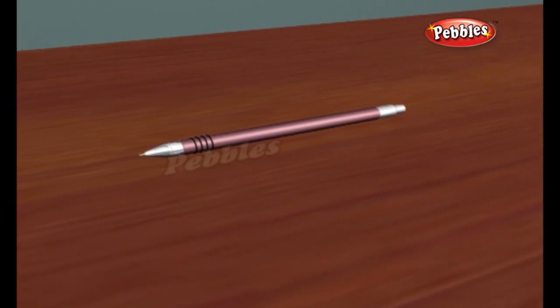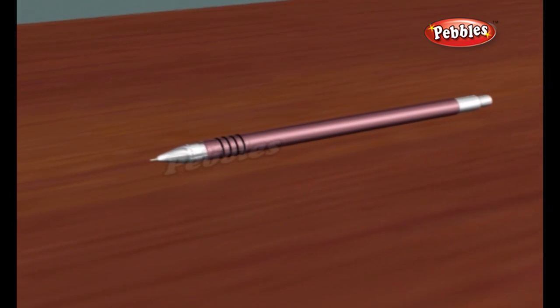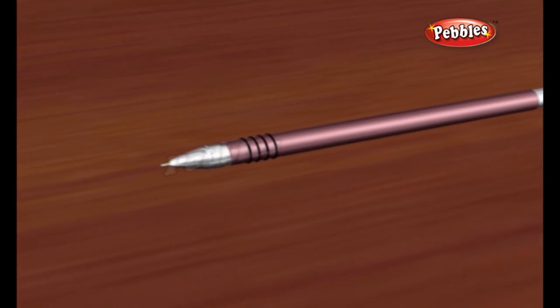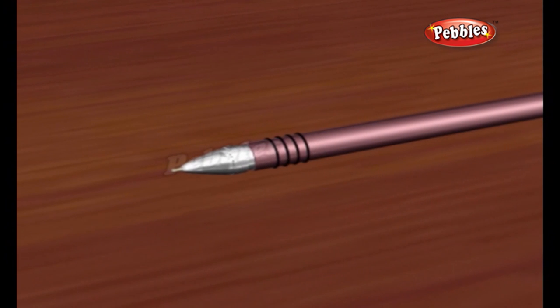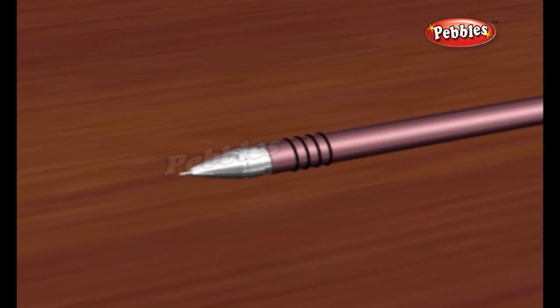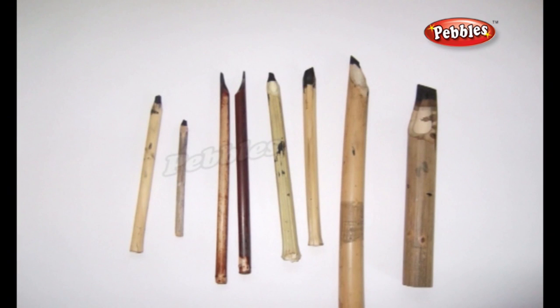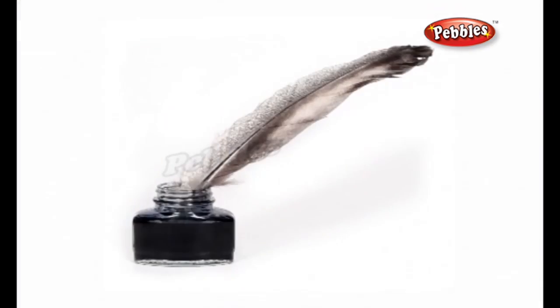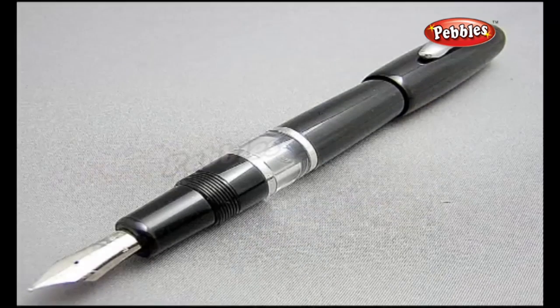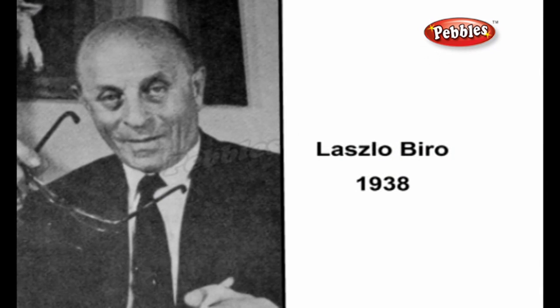Ballpoint. A pen is a tool used for writing or drawing with a colored fluid such as ink. A ballpoint pen is a pen that uses a small rotating ball made of brass, steel or tungsten carbide to disperse ink as you write. It is very different than its pen predecessors, the reed pen, quill pen, metal nib pen and fountain pen. A Hungarian journalist named Laszlo Biro invented the first ballpoint pen in 1938.